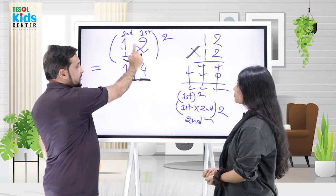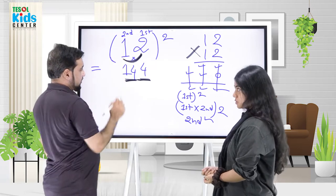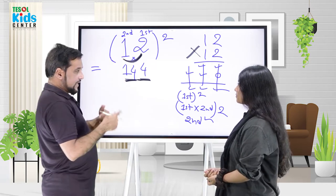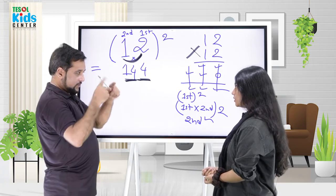So the formula is: first digit squared, double the product of both digits, second digit squared.